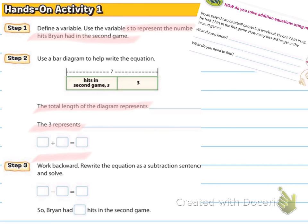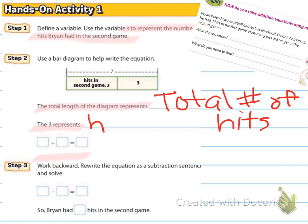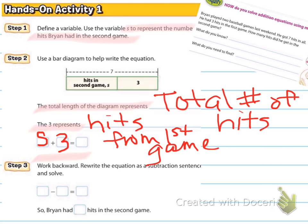Okay, so the total length of the diagram represents the total number of hits. So this is the total number of hits. And the three represents the hits from the first game. So hits from first game. Now, the equation that we're going to set up, something plus something equals something.